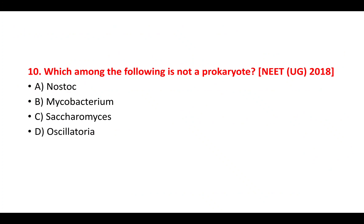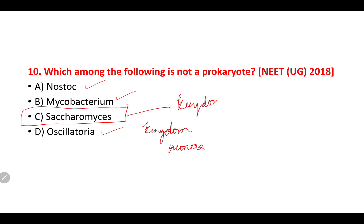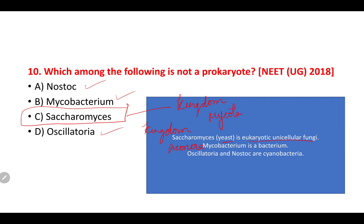Question 10: which among the following is not a prokaryote? The options are Nostoc, Mycobacterium, Saccharomyces, and Oscillatoria. Nostoc, Mycobacterium, and Oscillatoria all belong to kingdom Monera. Saccharomyces, commonly known as yeast, is a unicellular eukaryotic fungi belonging to kingdom Mycota. Mycobacterium is a bacterium; Oscillatoria and Nostoc are cyanobacteria. So option C — Saccharomyces — is not a prokaryote.